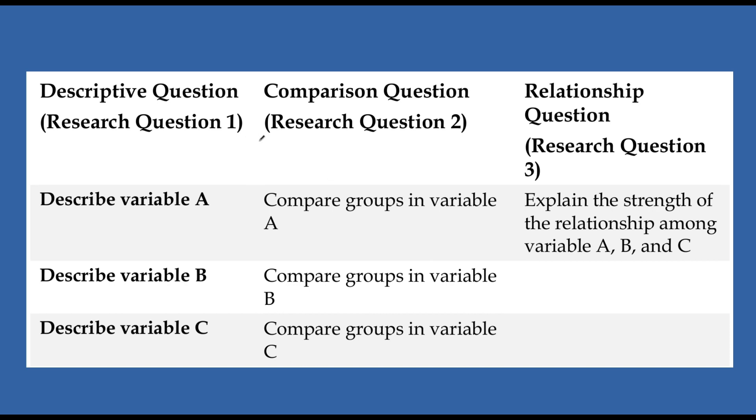Now, this slide is also important. And so remember, there are three types of research questions in social science, quantitative social science. You've got descriptive, you've got comparison, and you've got relationship type questions. And so generally what I do is I'm working with several variables here. You can see I've got a variable A, a variable B, a variable C.